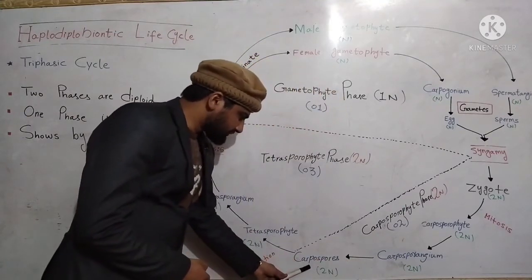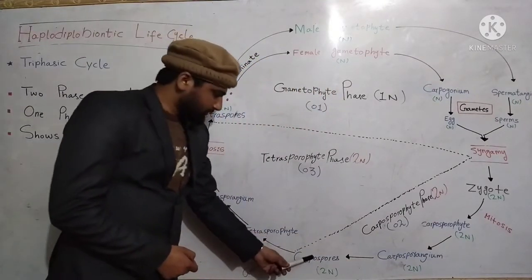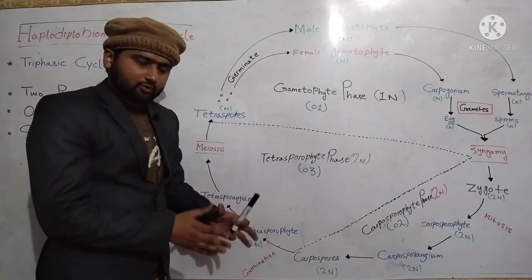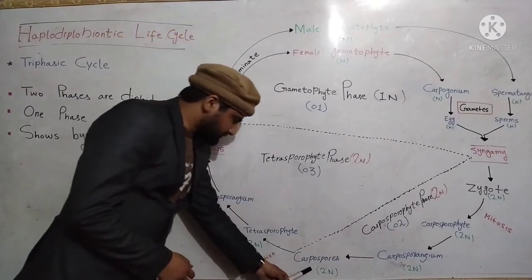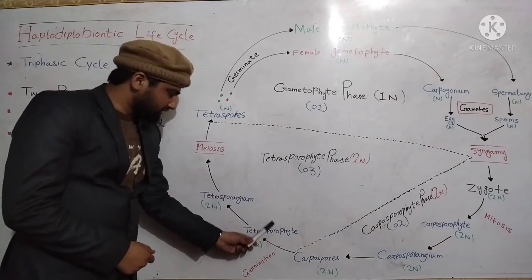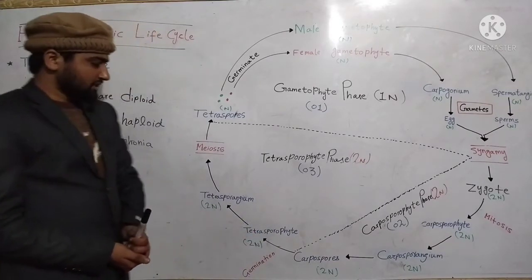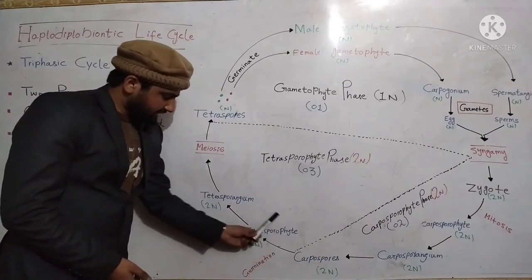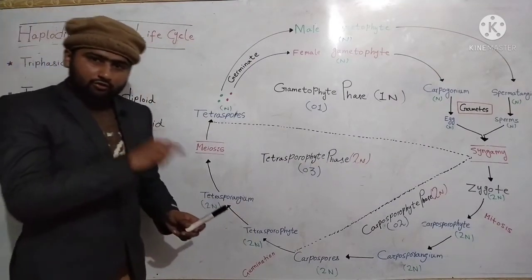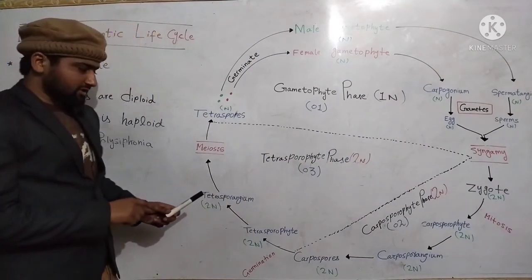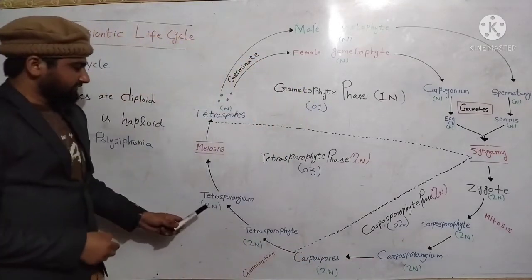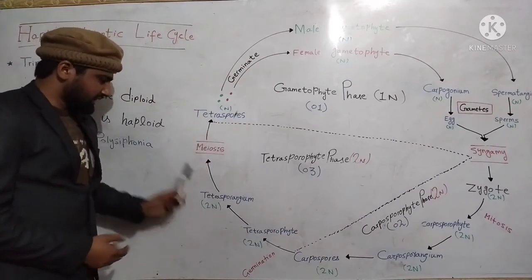Carpospores undergo germination — because the function of a spore is to germinate — and give rise to a new structure called tetrasporophyte. As indicated by the name, tetrasporophyte produces four spores called tetraspores, which are produced in tetrasporangium, just as carpospores were produced in carposporangium.